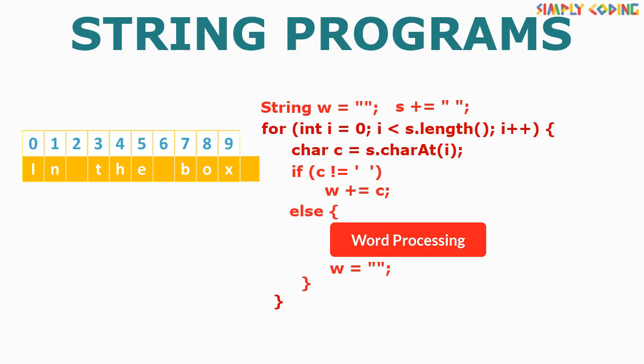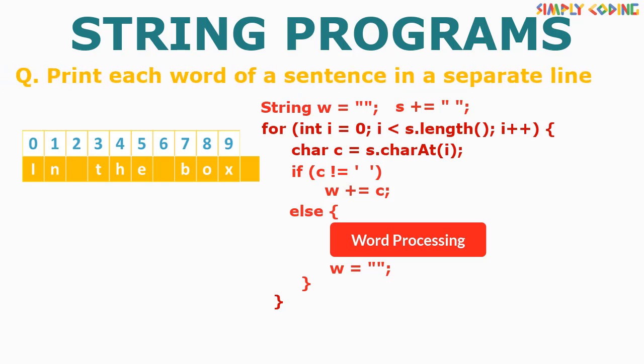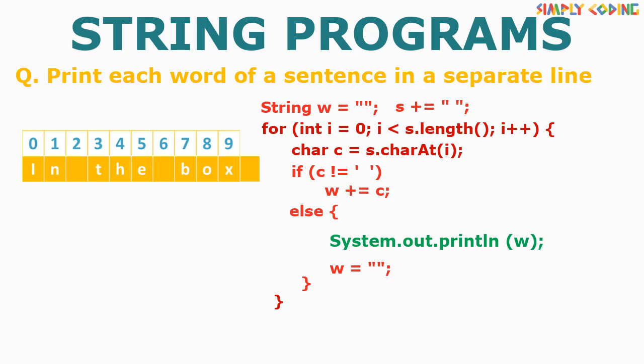Our first program is to print each word on a separate line. We already have our template ready. In the program, we are just asked to print each word. So in the else block, we will just add a line to print the variable w which stores our word every time. This will print each word and give us the program using this template.